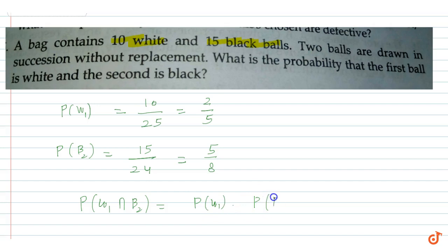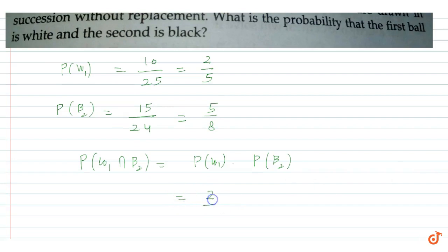Their multiplication is equal to 2 by 5 into 5 by 8, which is equal to 1 by 4. So the probability is equal to 1 by 4. This is the answer for this question.